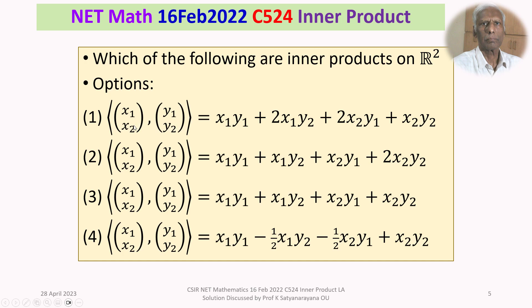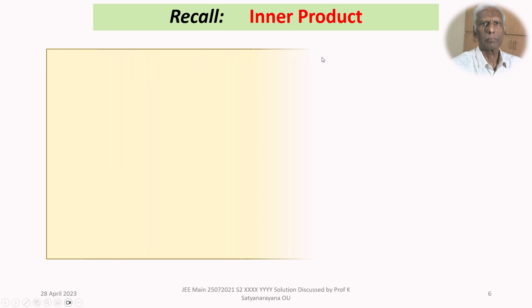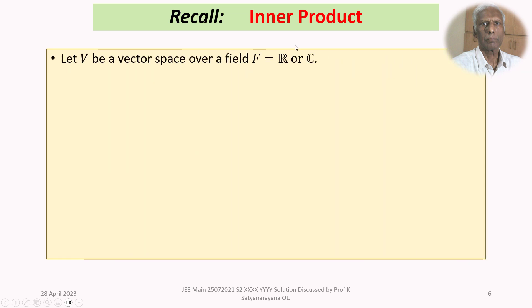Once it satisfies the four properties of the inner product, then we will call it as the inner product of (x1, x2) with (y1, y2). Until then, we read it as a bracket. So we are given four options, and we have to decide which of them are inner products on R square.